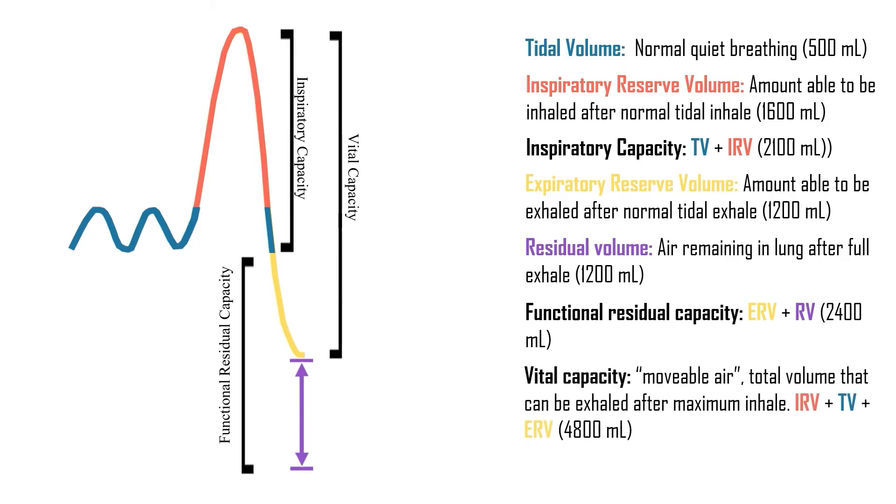So you find that value by adding the inspiratory reserve volume plus the tidal volume and the expiratory reserve volume. So vital capacity takes everything into account except for the residual volume.